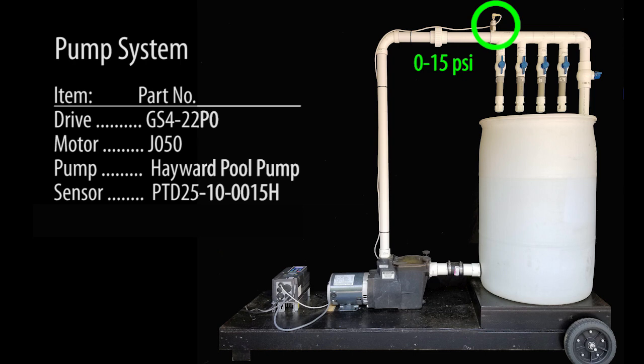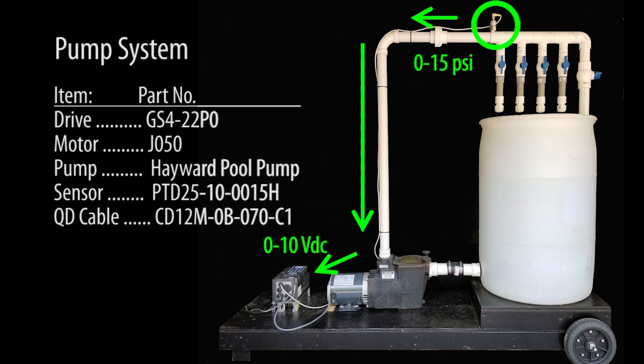This 15 psi pressure sensor is providing pressure values back to the GS4 drive as a 0 to 10 volt signal, where 10 volts is 15 psi.